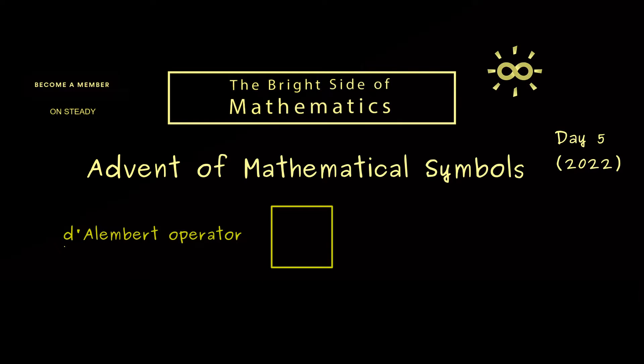Indeed, this d'Alembert operator is often used for applications in physics. More precisely, it's often used as a differential operator when we have three dimensions in space and one dimension in time.